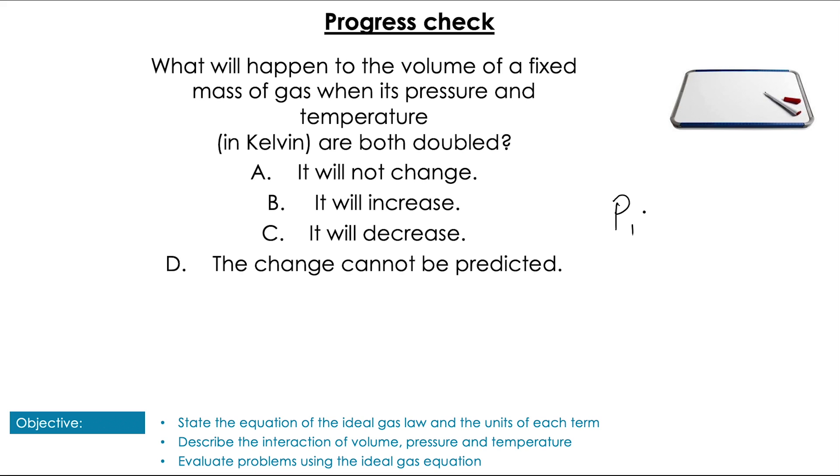Pop them up! So of course, using that same relationship that we just outlined P1 V1 over T1 equals P2 V2 over T2 we can see that if pressure and temperature, which pressure is on the top of the fraction and temperature is on the bottom of the fraction, then if they are both multiplied by 2 then we will get no overall change. So the answer will be A.